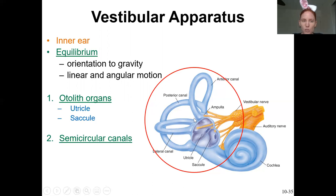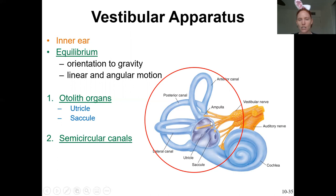The second region is the vestibule, also called the otolithic organs. That's the fat part at the bottom. Within the vestibule there are two membrane-bound structures: the utricle, which is closest to the semicircular canals, and the saccule, which is closer to the cochlea. Both the utricle and saccule are within the otolithic organs, also known as the vestibule.